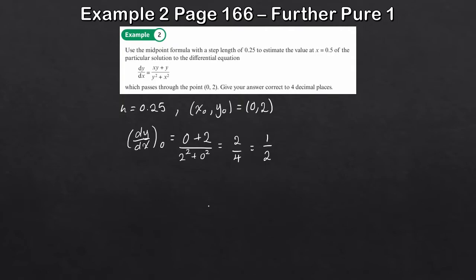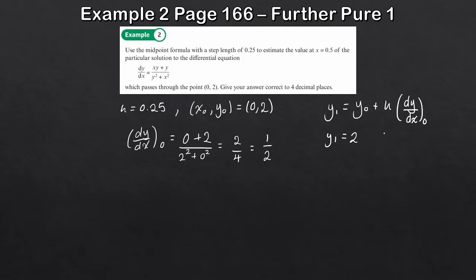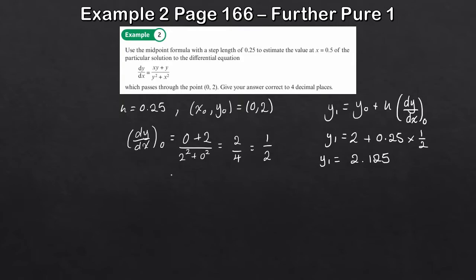Using the midpoint formula rearranged: y₁ = y₀ + h × (dy/dx at 0). So y₁ = 2 + 0.25 × (1/2) = 2 + 1/8 = 2.125. Our updated values are now x₁ = 0.25 and y₁ = 2.125.